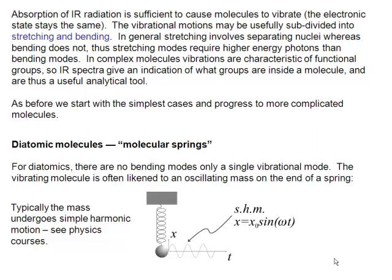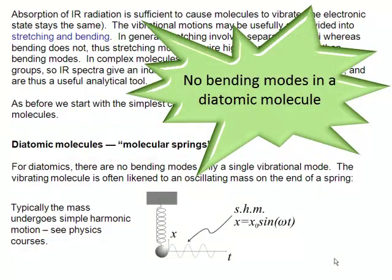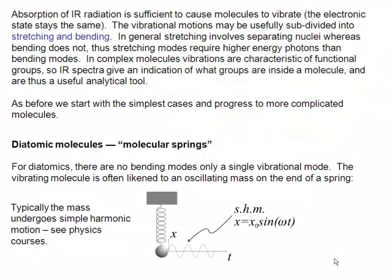We're going to start with the simplest possible case. We're going to treat our diatomic molecule as a molecular spring. Obviously, we only have to worry about the stretching modes. There are no bending modes in a diatomic molecule. So let's think about that diatomic vibration as a molecular spring. And what do we know about molecular springs?